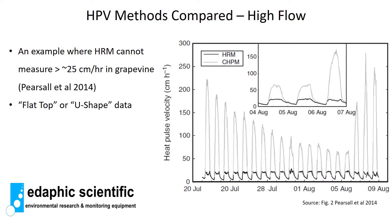A study conducted by Pearsil et al. in 2014 highlights very nicely the difference between the heat ratio method and the compensation heat pulse method at high rates of flow. In the inset, the black line is the heat ratio method and the grey line is the compensation heat pulse method. The black line stops at about 30 centimeters per hour, whereas the grey line gets above 50, and on one particular day above 150 centimeters per hour. Over an extended two-week dataset, the heat ratio method consistently stops at about 30 cm/hr while the compensation heat pulse method measures well above 200 cm/hr, producing a characteristic flat-top or U-shaped pattern.